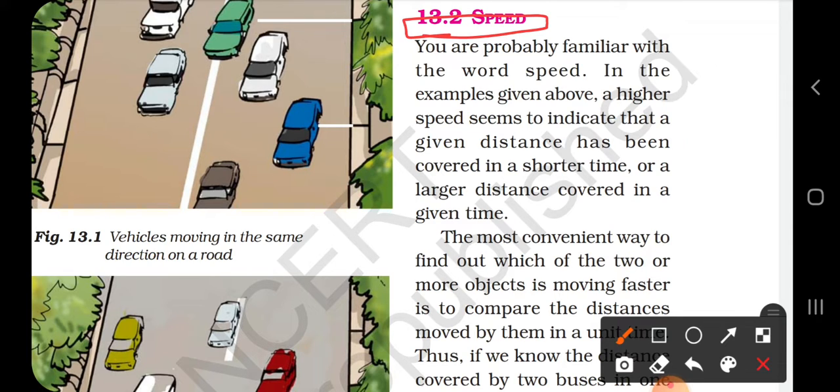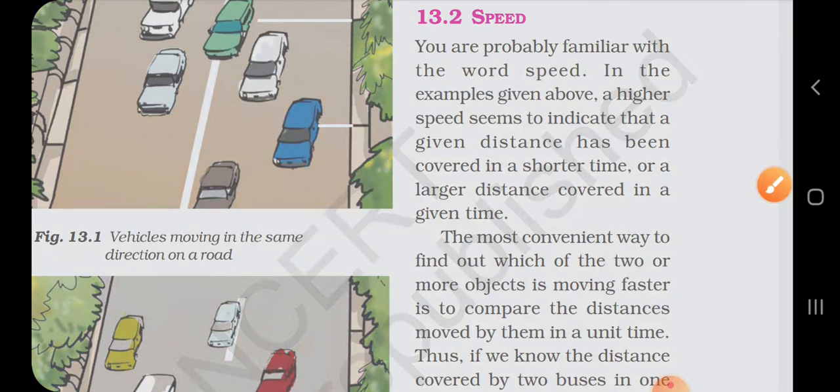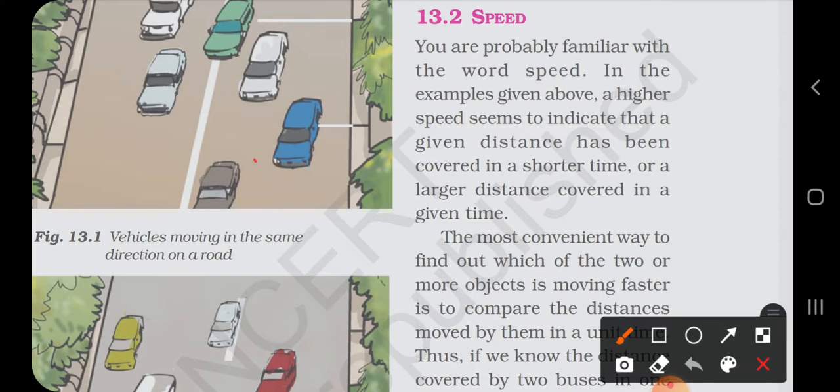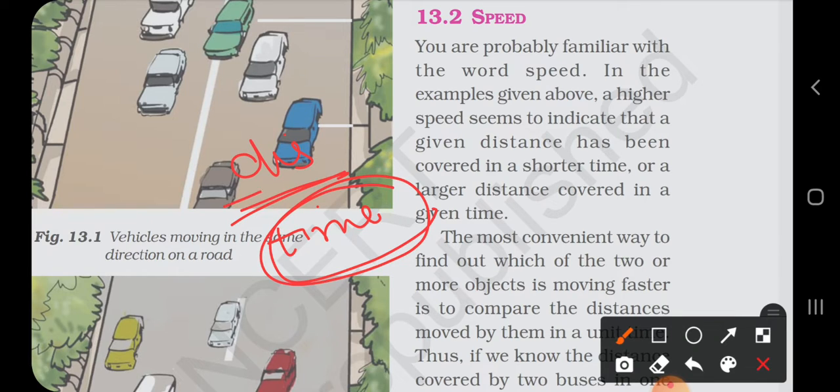So how can we define speed? Speed can be defined as the distance traveled per unit time. How much distance you covered in one unit of time is called speed.